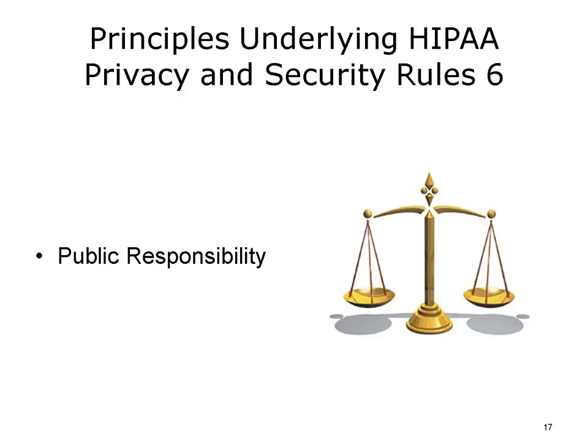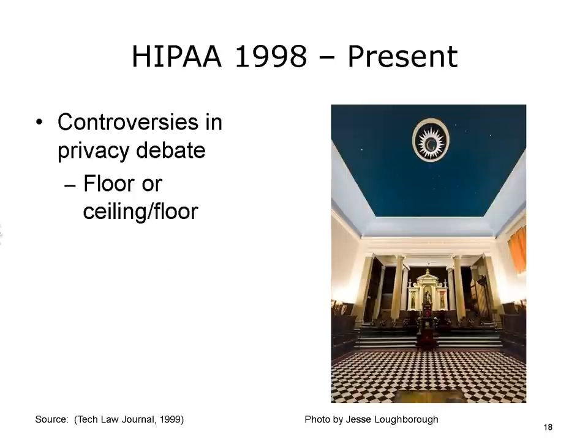Finally, there needs to be a balance between the individual's rights and the public's needs. This is where much of the controversy in the legislation over the subsequent three years wound up, in terms of how to achieve that balance. Issues related to public health, fraud and abuse, monitoring quality of care, and research may need some of this information. With that background, let's look at what has happened with the privacy legislation.